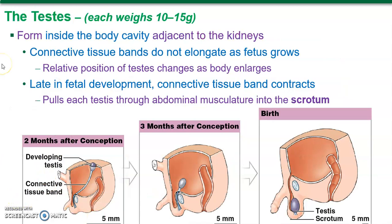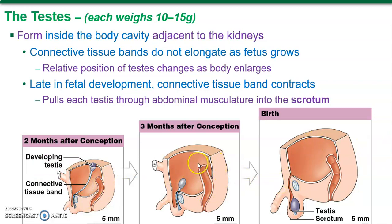Sticking with the testes: in other organisms — like birds — they're internal, hanging by the kidneys. As we develop, there's a connective tissue band here. As the body grows bigger, this band stays the same size, basically pulling the testes down — that's how they descend. Usually by birth or by about nine months afterwards, the testes have descended down into the scrotum.